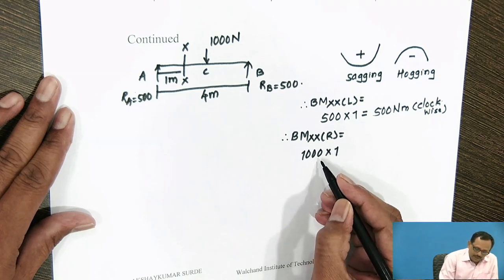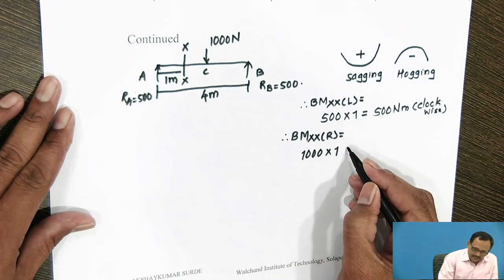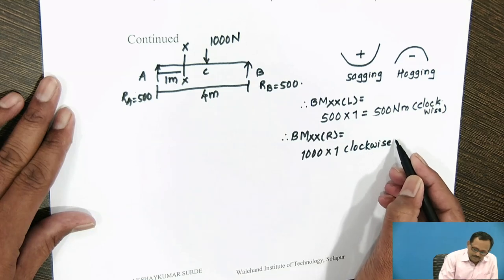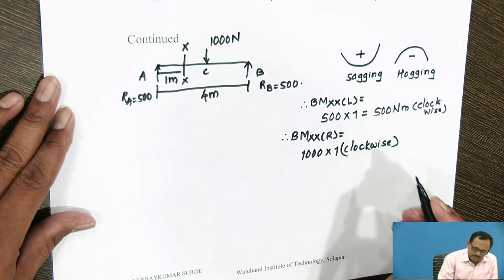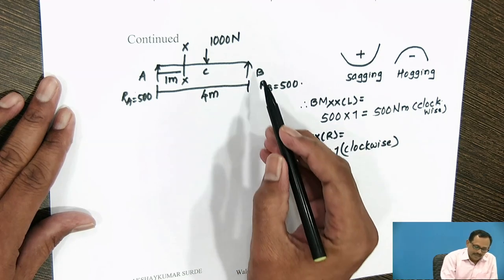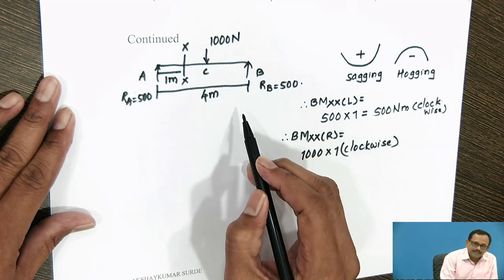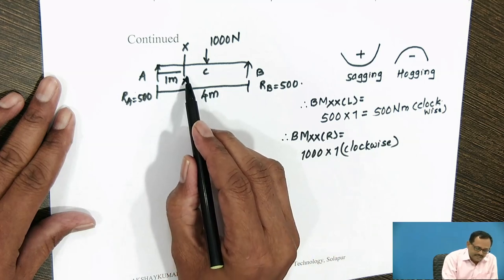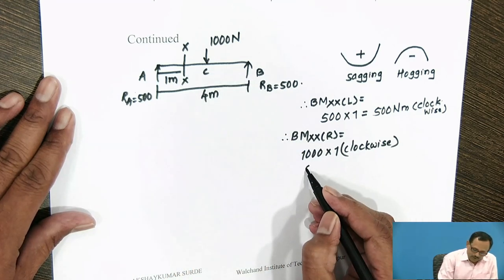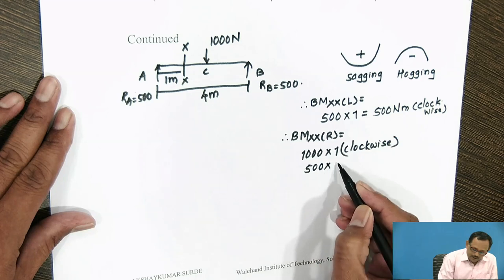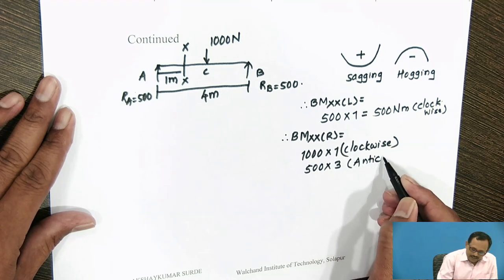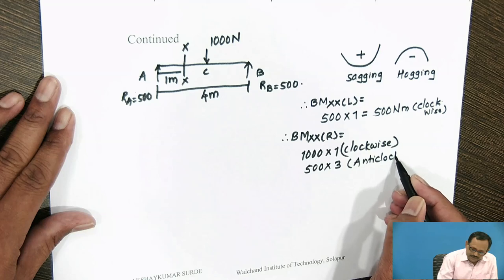And there is a reaction at B of 500 N and its distance from the section is 3 meters. 500 × 3 — this moment is in the anticlockwise direction.